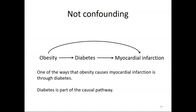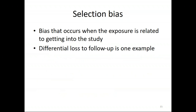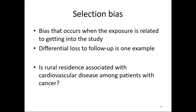Confounding is one major bias; selection bias is another. Selection bias happens when the exposure is related to how you get into the study or whether you can observe the events. Classic examples involve case-control studies, but I think differential loss to follow-up in electronic medical records research is actually a more informative example today. For instance, if we want to know whether rural residence is associated with cardiovascular disease among cancer patients at UAB, the way patients get into cancer care at UAB is different from how they get into cardiovascular care.